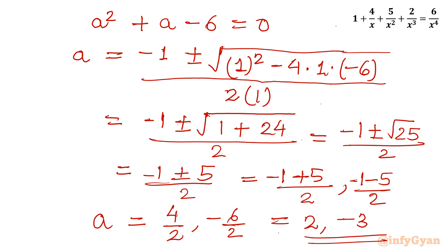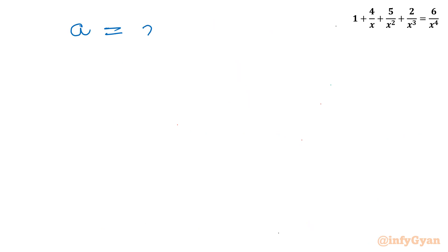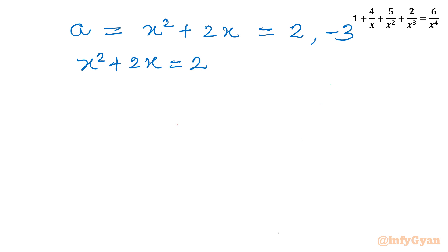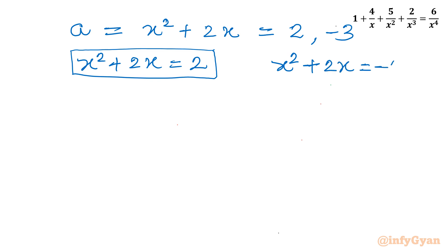Putting back our substitution x squared plus 2x: we get two equations. First, x squared plus 2x equal to 2, and second, x squared plus 2x equal to negative 3. So there will be potentially 4 solutions. Let us check whether they are real solutions or not.